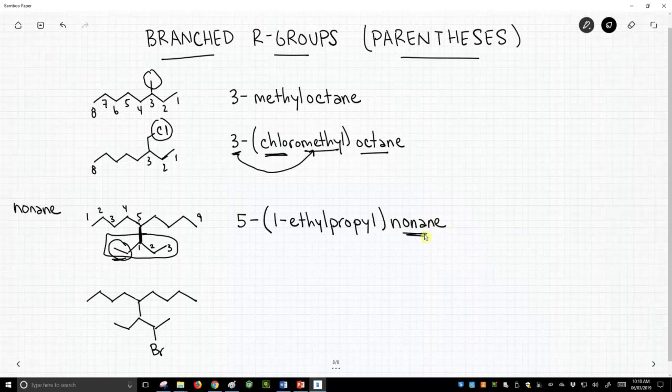So what do we have? We have a nonane. That nonane has something in the five position. What's in the five position? Go to the end of the parentheses. It's our propyl group, but our propyl group itself has something coming off of it. It has, in the one position, an ethyl group. So using parentheses, we can give numbering for different groups. So this number one refers to the propyl chain, not the nonane. And the parentheses let us separate these ideas.